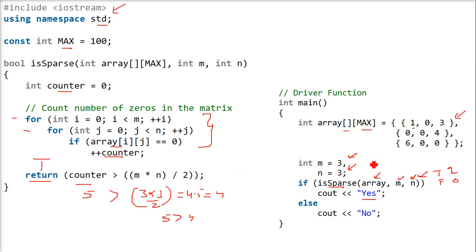Otherwise, if it returns, say I make it as 10 or 20, now there will be only 1, 2, 3 zeros. So 3 is not greater than 4, so false will return and else will be printed. This is how the sparse matrix can be checked.